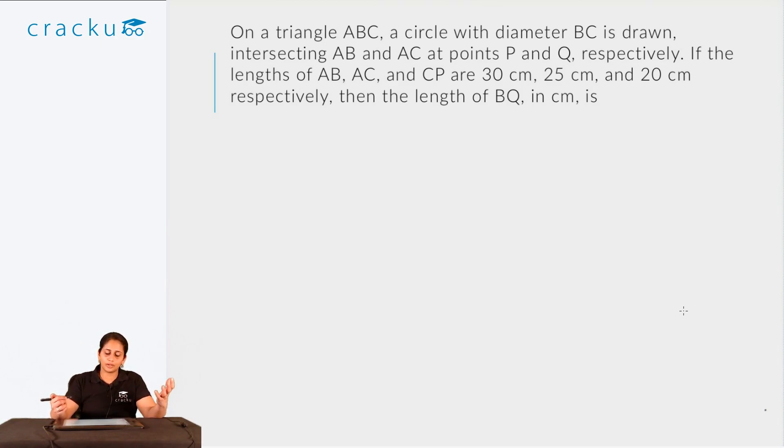Now that we know how to handle questions on quadrilaterals from CAT, let us take a question from triangles. So consider the following question. On a triangle ABC, a circle with diameter BC is drawn intersecting AB and AC at points P and Q respectively. If the lengths of AB, AC, and CP are 30, 25, and 20 centimeters respectively, then the length of BQ in centimeters is. So let us draw out this particular configuration.